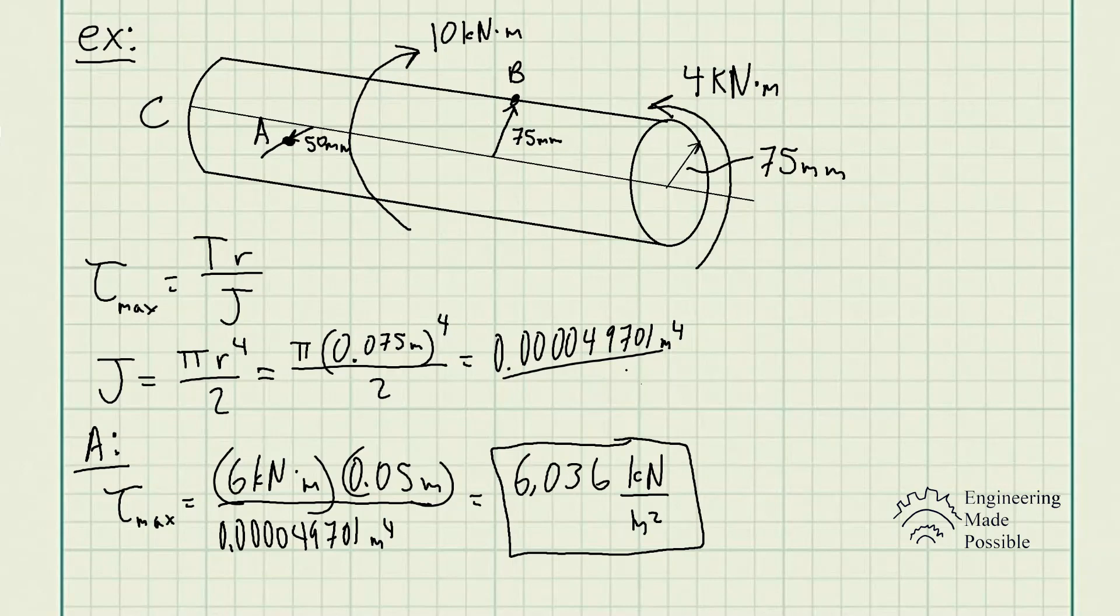That's the shear stress at point A. Now, one thing that I forgot to mention, this isn't the maximum stress that this rod experiences. This is at point A, because remember, the maximum shear stress that we'll experience will be at the surface. In this case, it would, in fact, be point B, which we're going to solve right now.